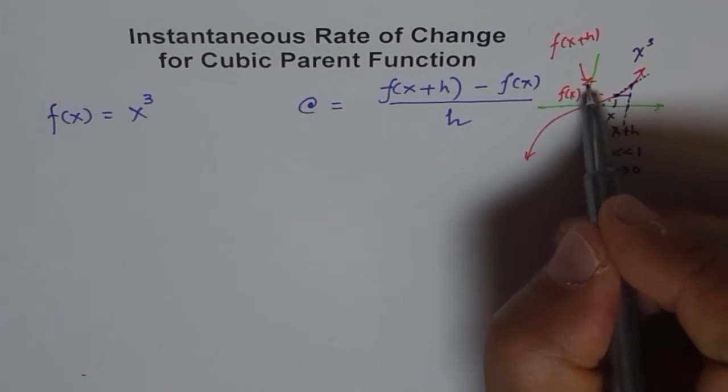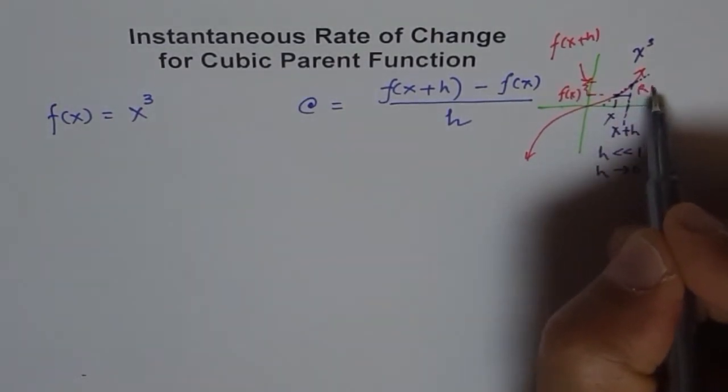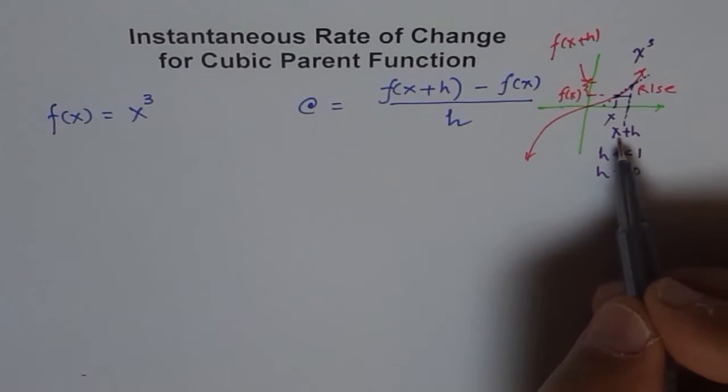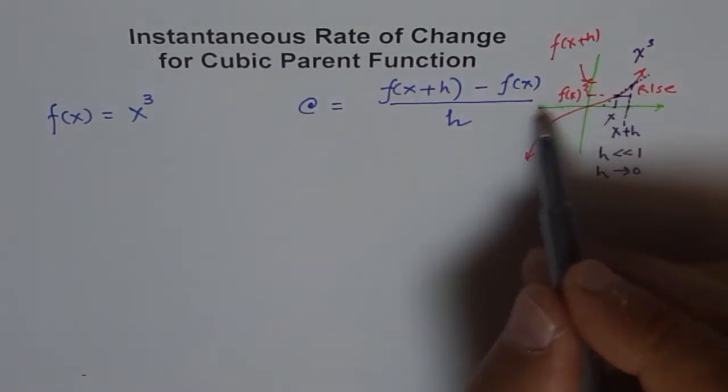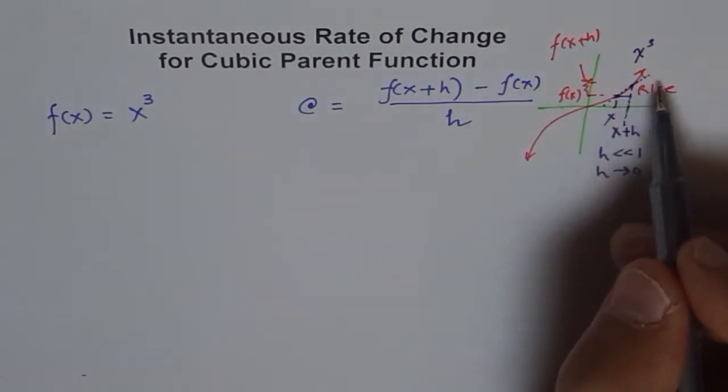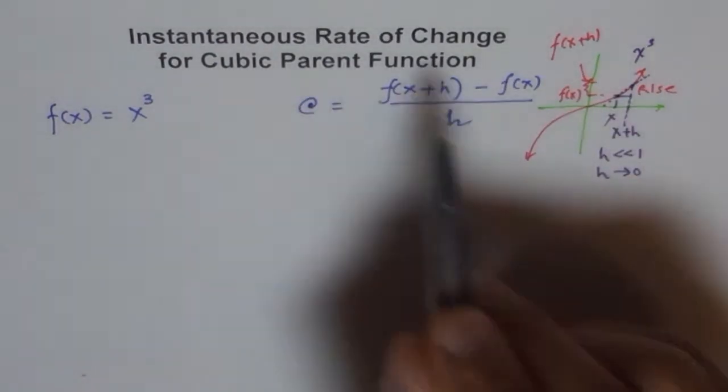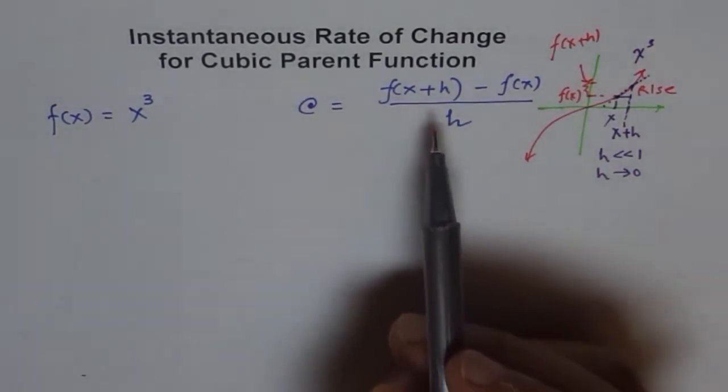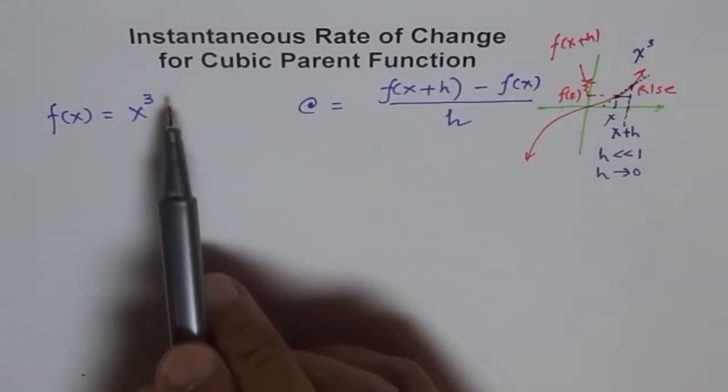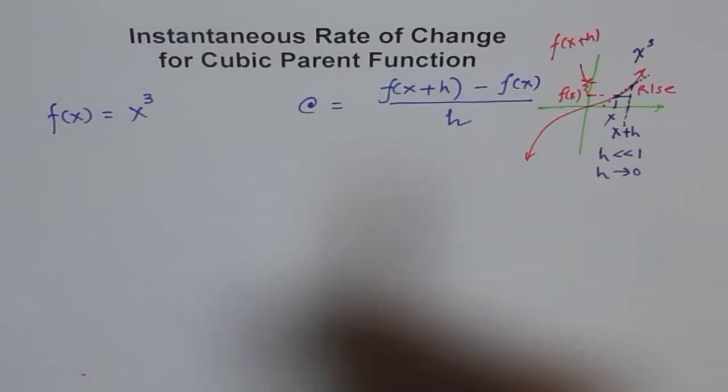The distance from here to here is the rise. The distance between x+h minus x is the run, and that run is h. Rise over run is the slope of this tangent, and that slope gives us instantaneous rate of change. Now we'll use this formula for the cubic parent function.